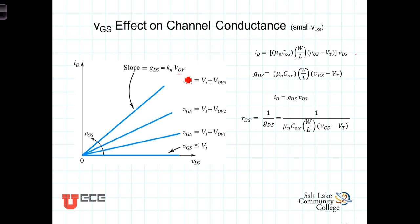So what this is saying is that as we continue to increase the voltage at the gate above the threshold voltage, more and more current is able to flow for a given VDS. In other words, the conductance of the channel continues to increase.